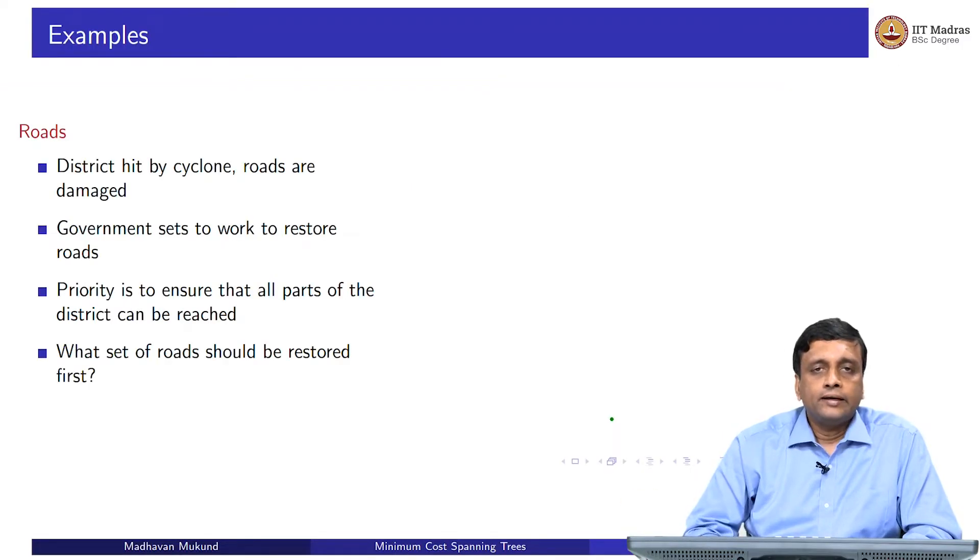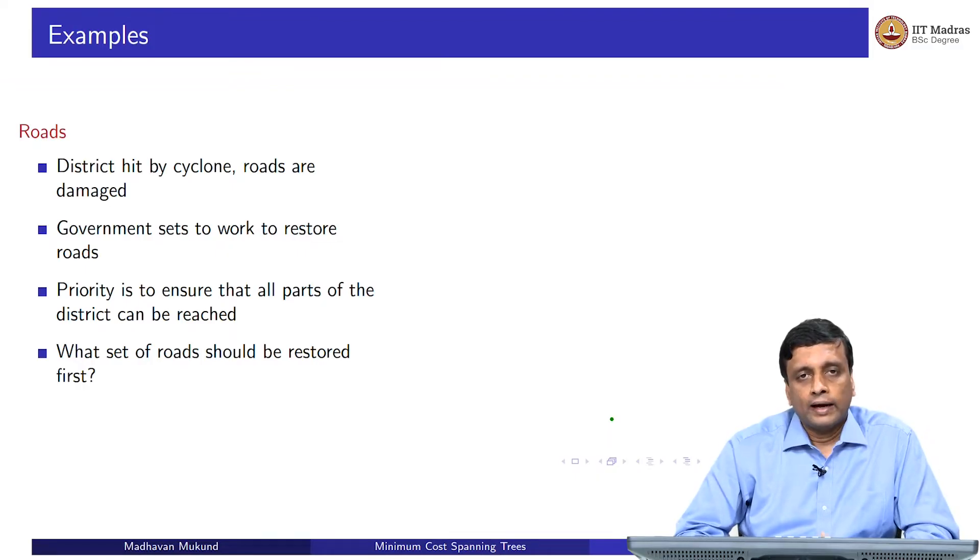Minimum cost spanning tree comes into play when we want to analyze a graph and see how to recover a connected part of it. For example, you could have a district where roads have been damaged by a cyclone and you want to restore the roads. Your first priority is to make sure that you can go from everywhere to everywhere.